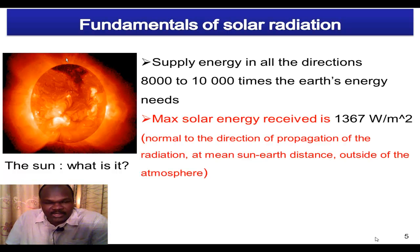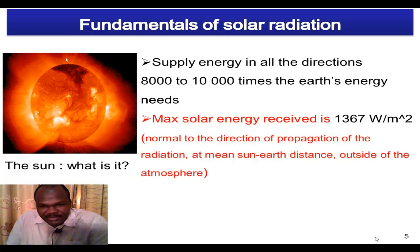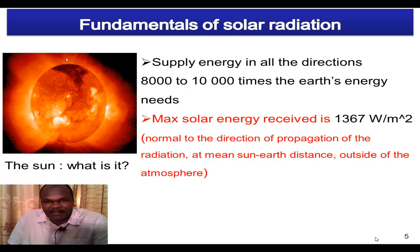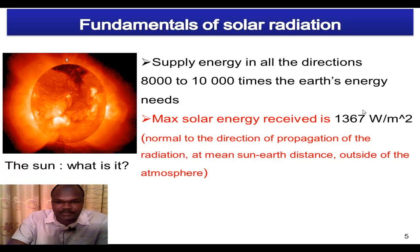The sun, because of the high temperature, supplies energy in all directions. It's been said that that energy is about 8,000 to 10,000 times the earth's energy needs. The maximum solar energy received on top of our atmosphere, averagely, is about 1,367 watts per square meter — that's just above the atmosphere. This number is called the solar constant.